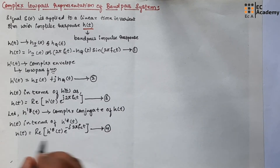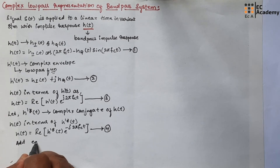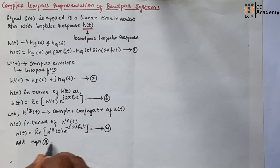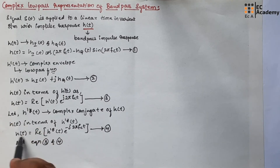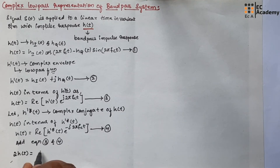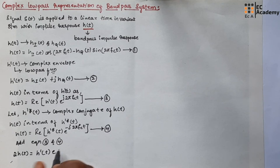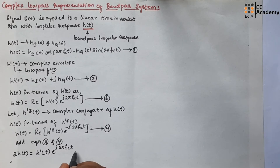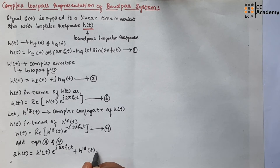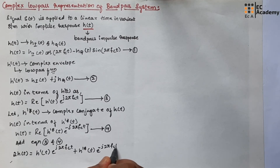Now let us add equation 3 and equation 4. If we add them, we obtain: 2H(t) = H̃(t) · e^(j2π fc t) + H̃*(t) · e^(−j2π fc t). Let us call this equation number 5.